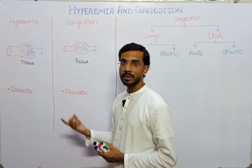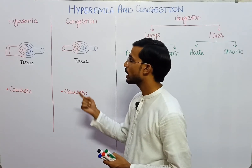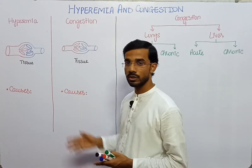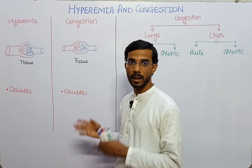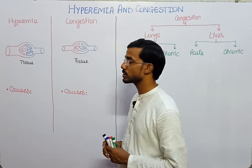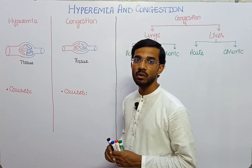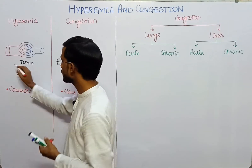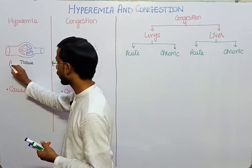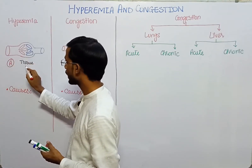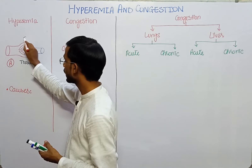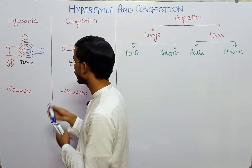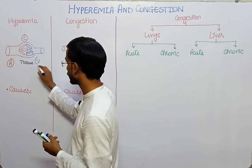The arrangement of the blood vessels is: first arteries, then arterioles, then capillaries, then venule, and last is the vein. Here you can see this is the arterioles, then capillaries, and last is the venule.